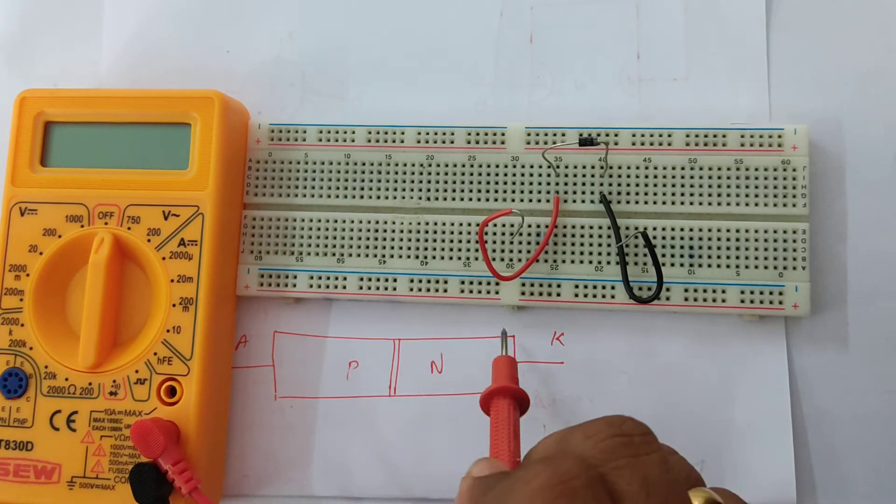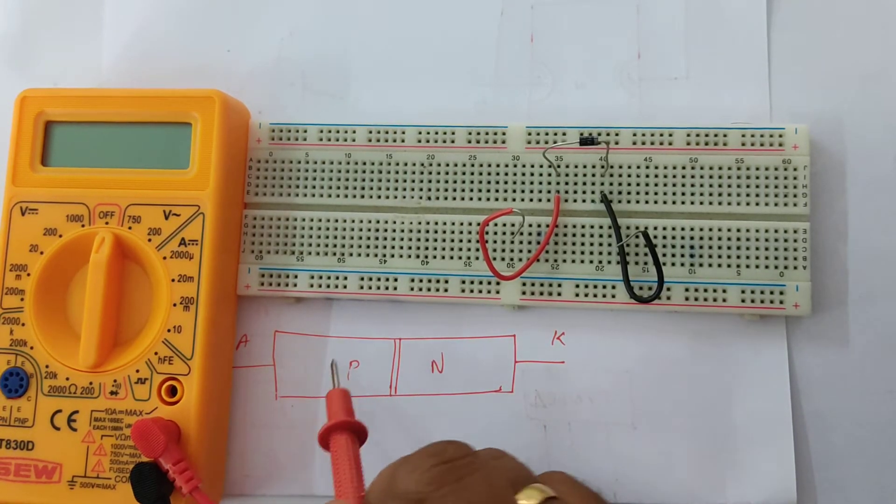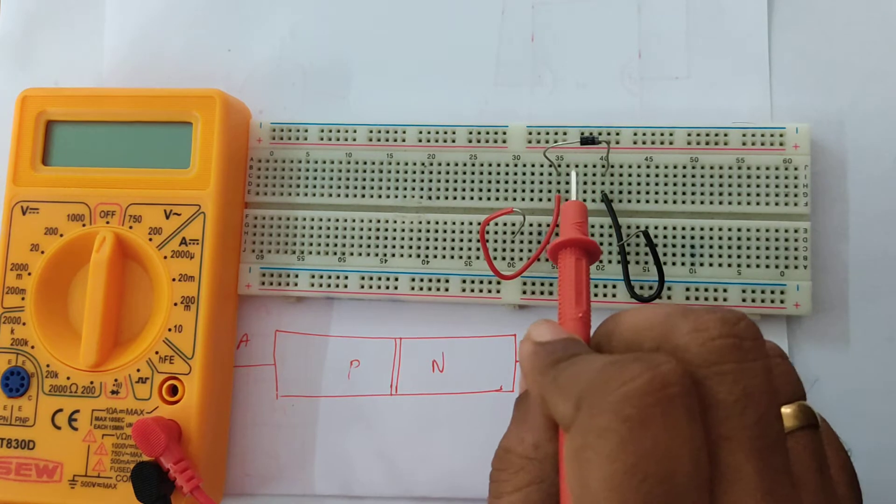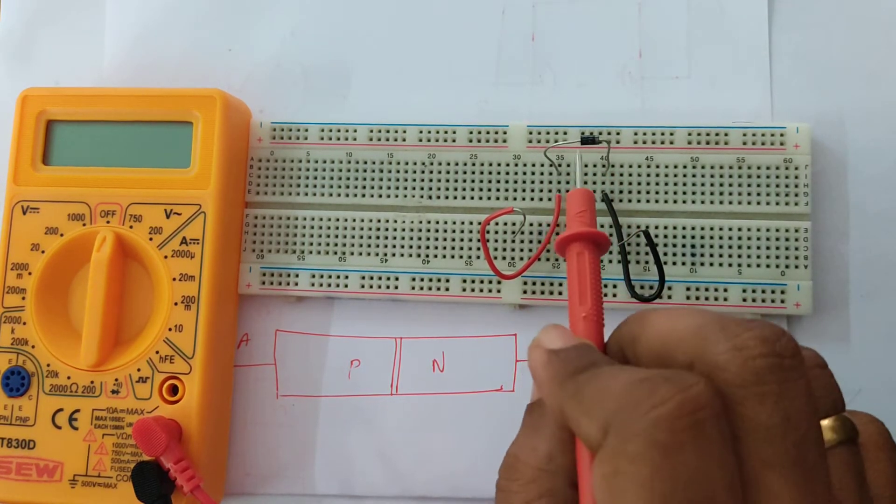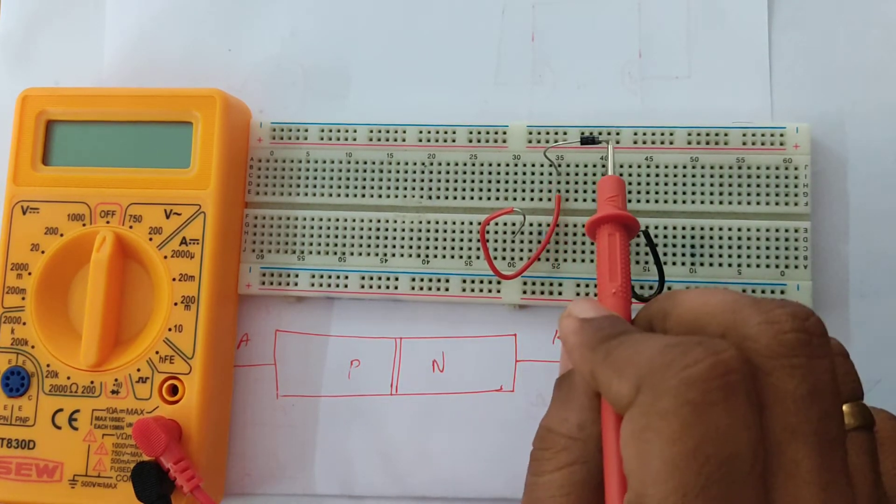We have drawn a PN junction diode pictorially and this is the real PN junction diode. As you can see here there are two terminals, one is the anode, the other one is the cathode.